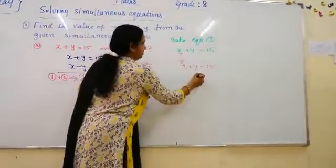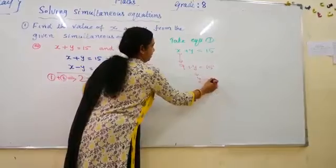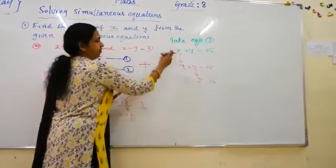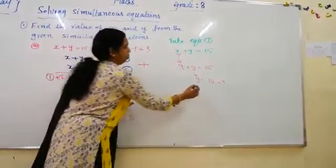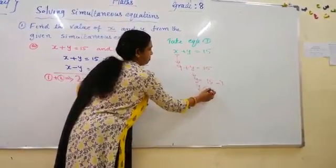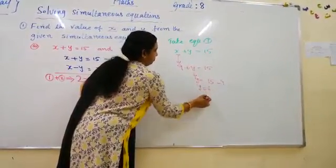So y is equal to, it is 15, the 9 will go to another side, it will become minus. So y is 6.